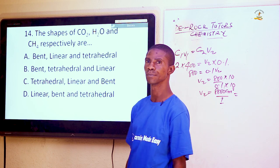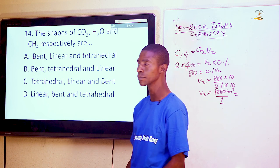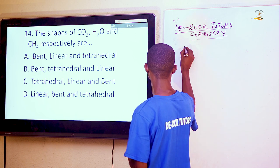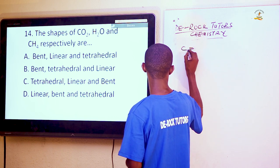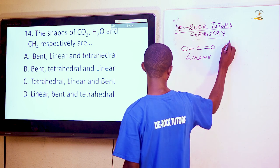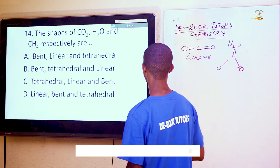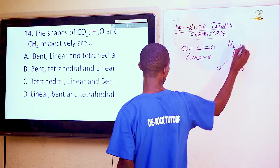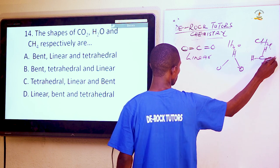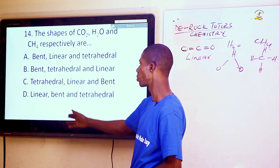Question 14: What are the shapes of carbon dioxide, water, and methane respectively? CO₂ has the structure O=C=O, which is linear. Water H₂O has H-O-H, forming a V-shape or bent structure. Methane CH₄ has hydrogen atoms on all sides, giving a tetrahedral shape. Therefore the answer is linear, bent, and tetrahedral — option D.